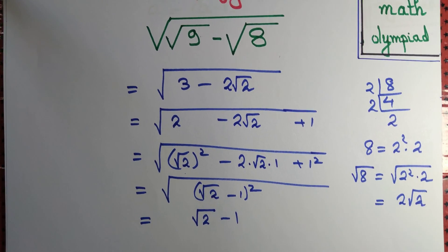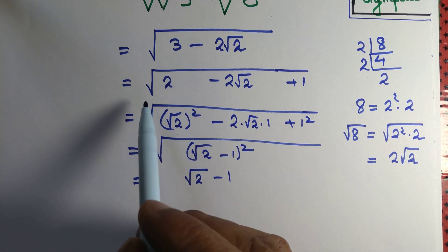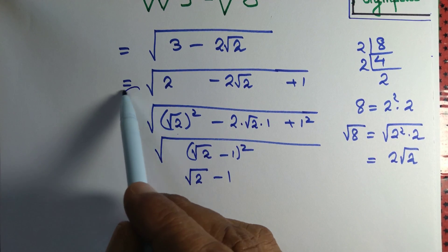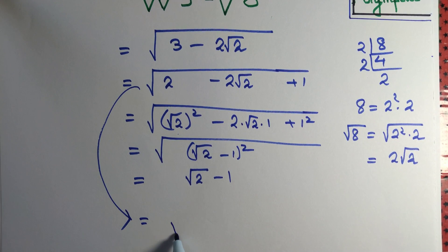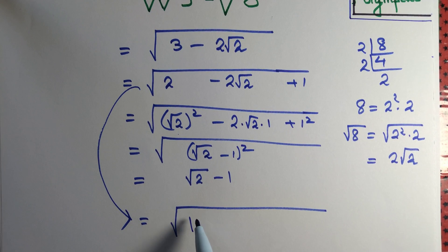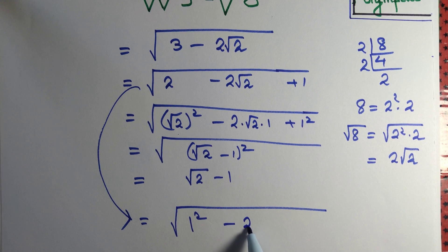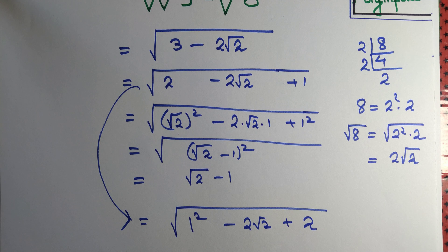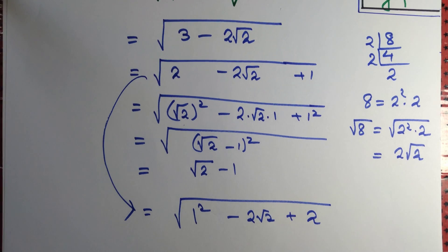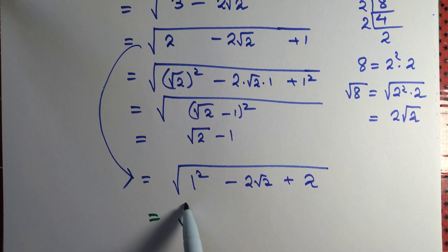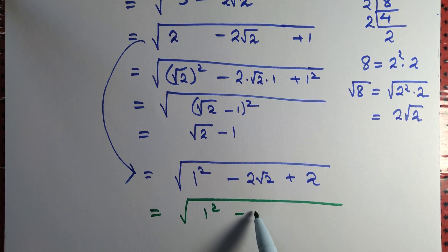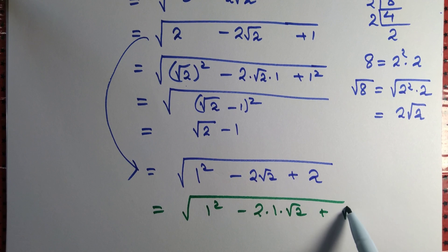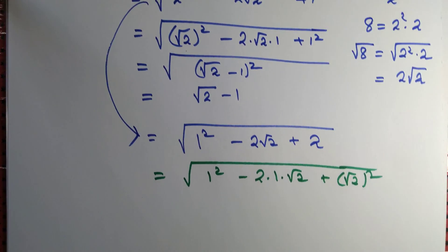Suppose someone does a slightly different method. 3 can be written as 2 plus 1 or someone writes say 1 plus 2. So 1 square minus 2 root 2 plus 2. Is he correct? Yes. Then he writes it as 1 square minus 2 into 1 into root 2 plus root 2 square. Yes, he is correct.